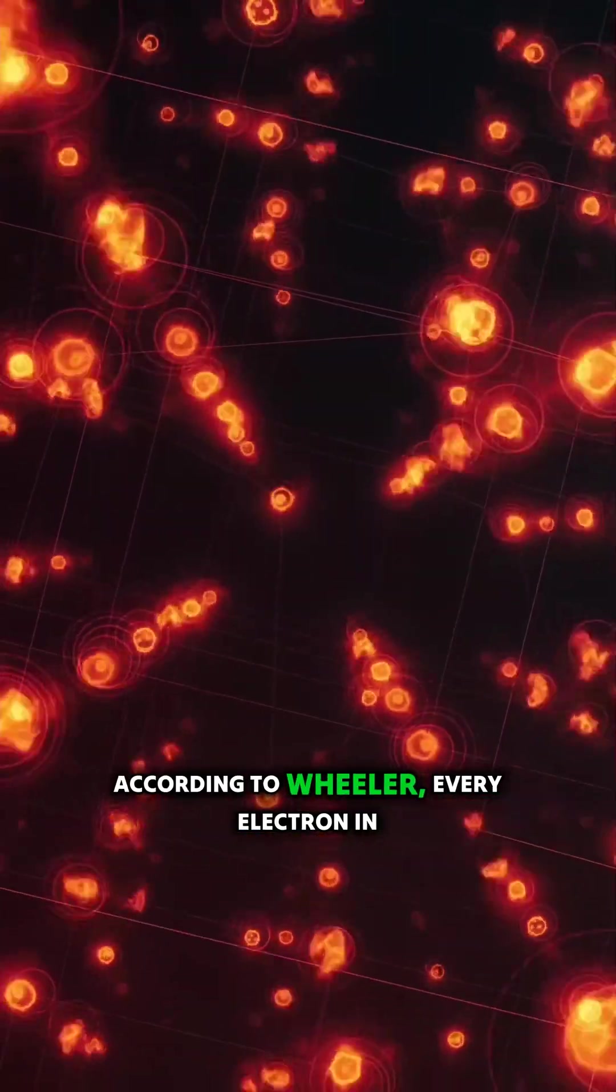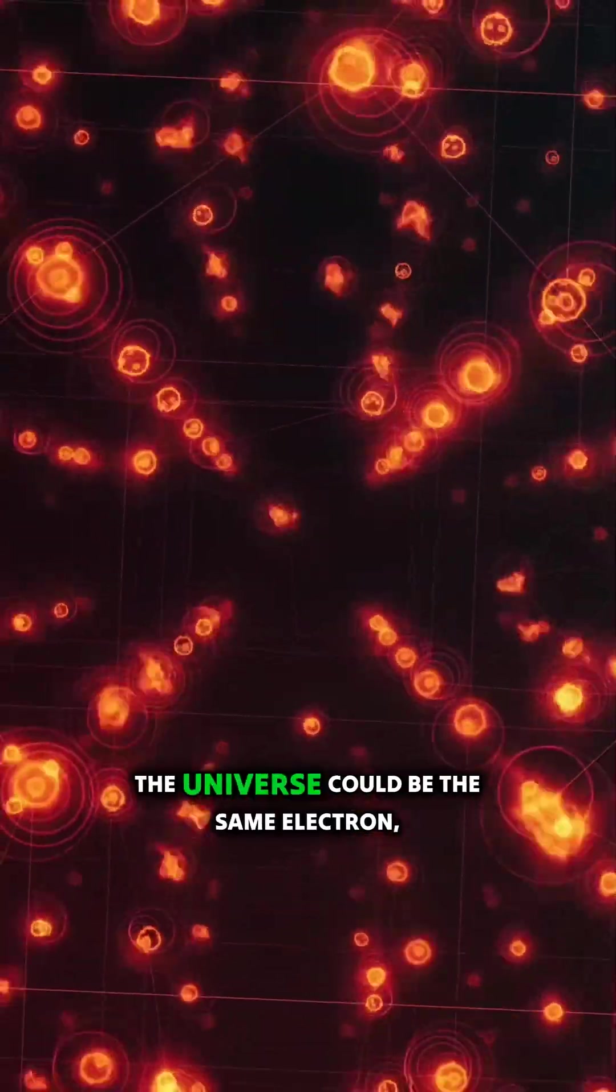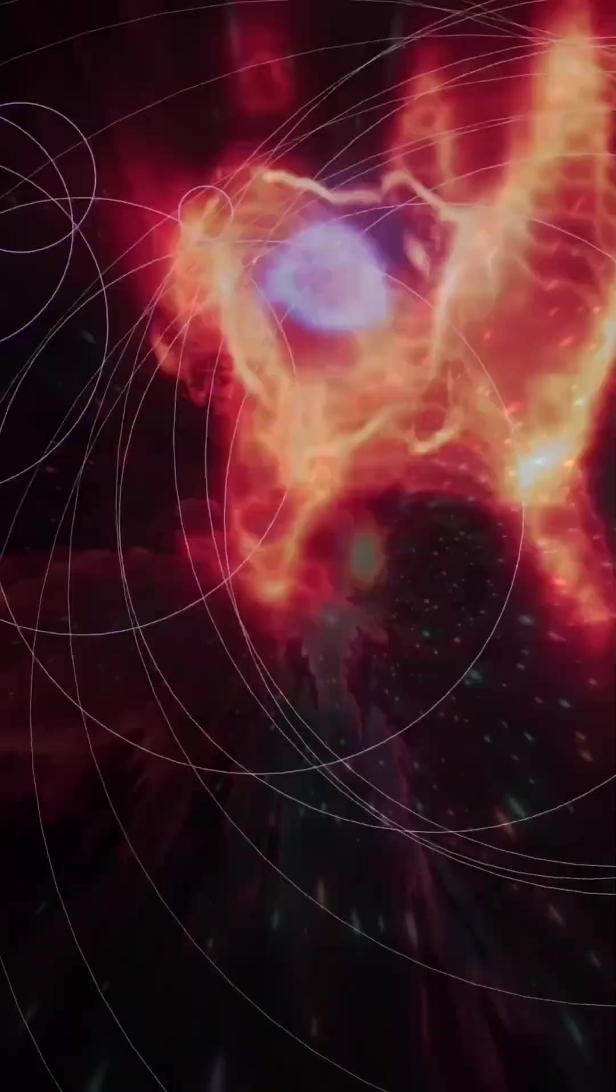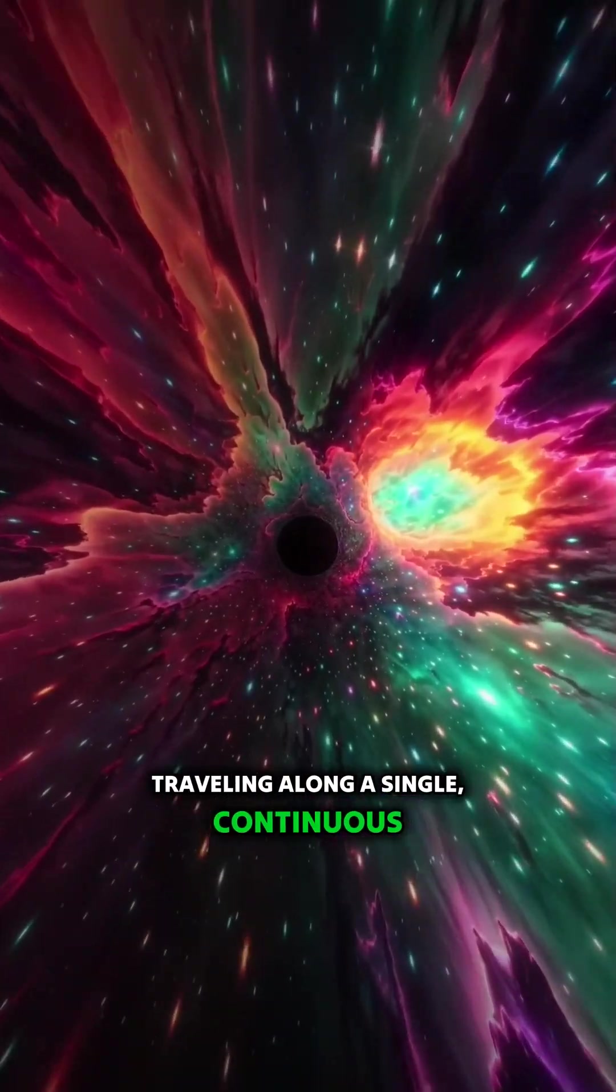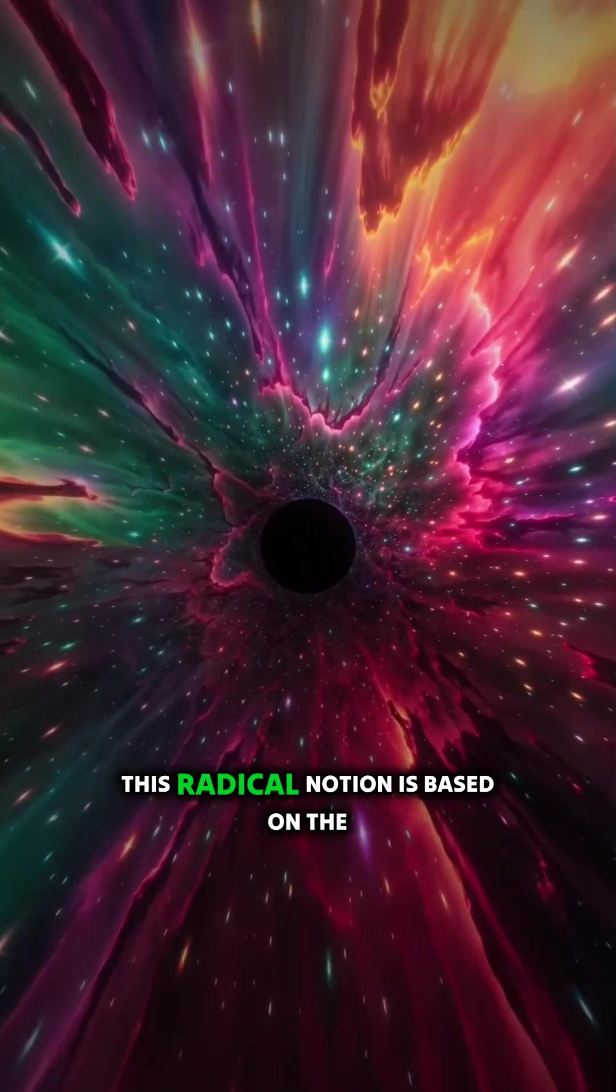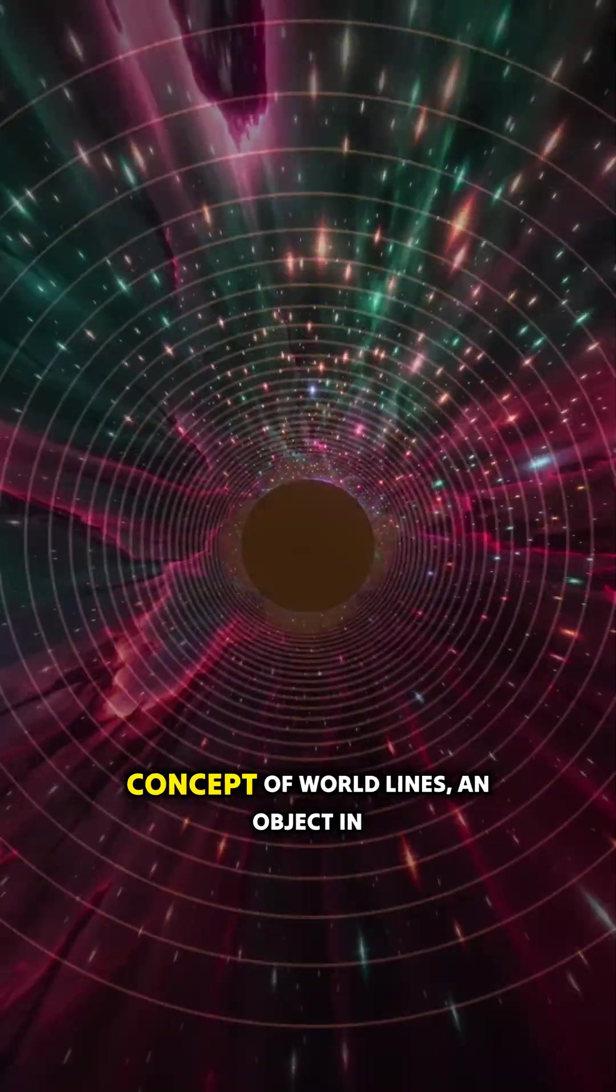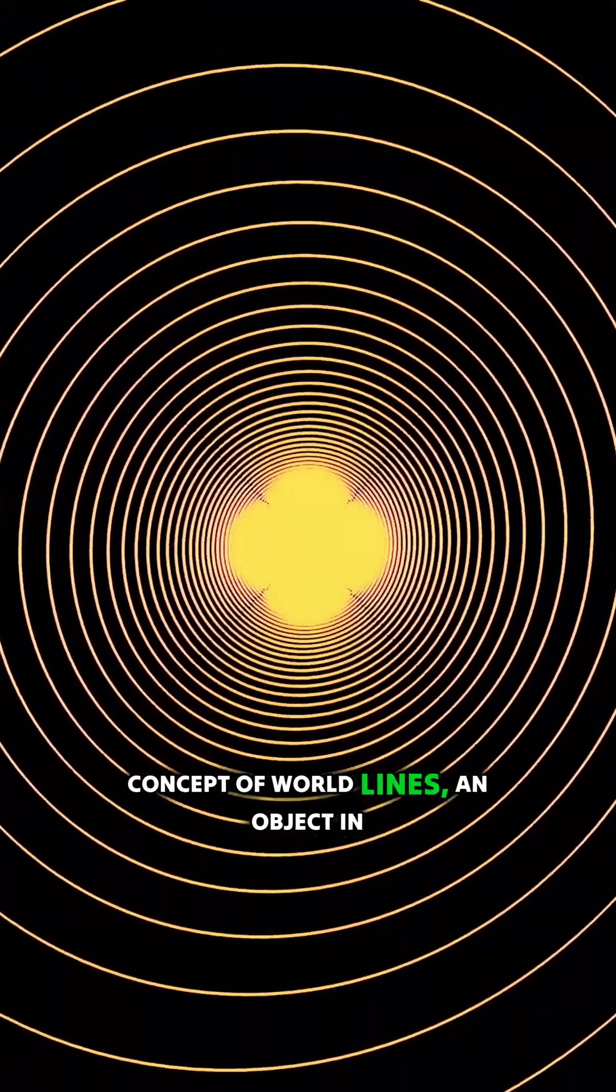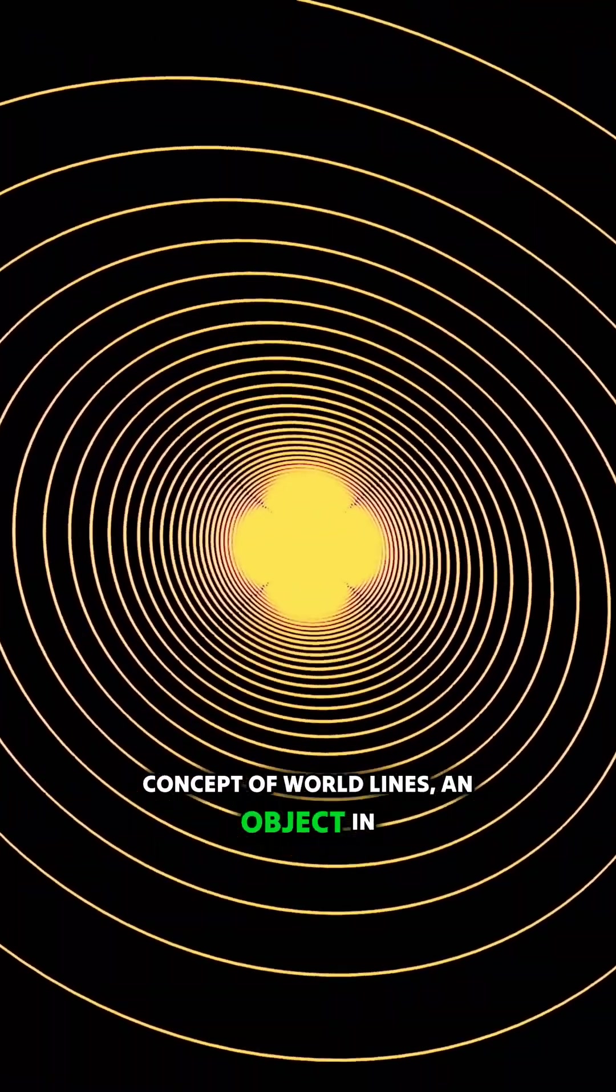According to Wheeler, every electron in the universe could be the same electron traveling along a single continuous trajectory through time and space. This radical notion is based on the concept of world lines, which represent the path of an object in space-time.